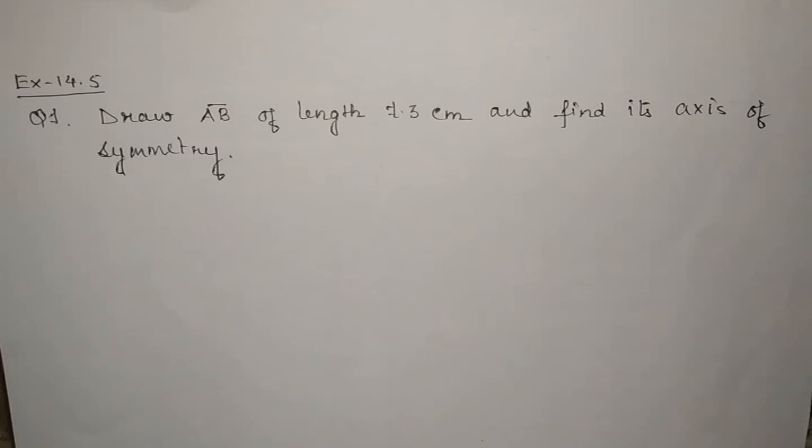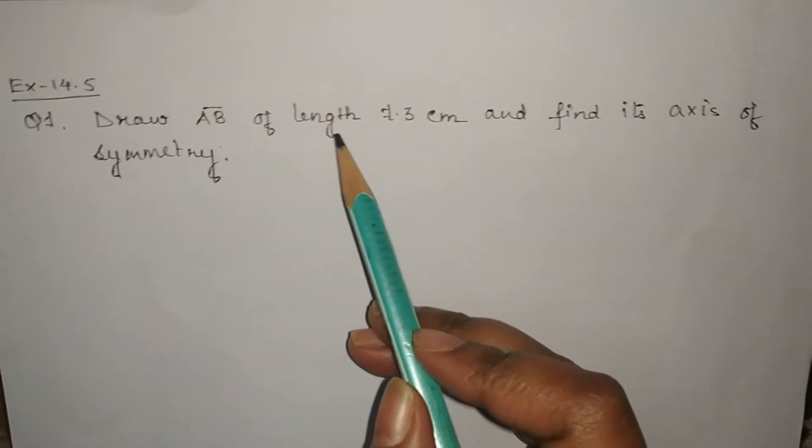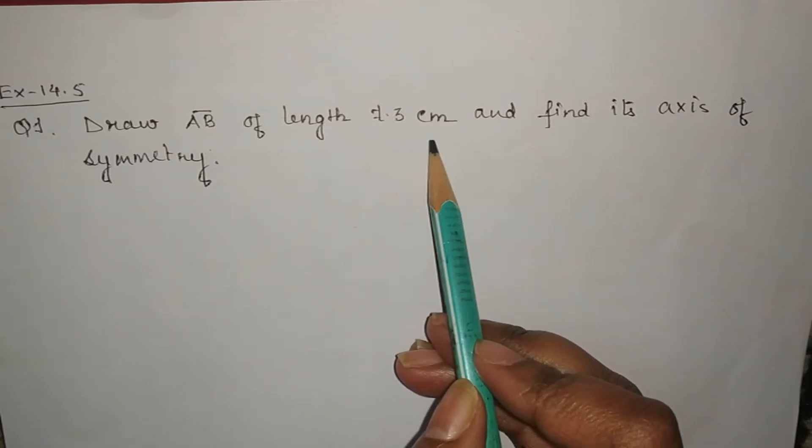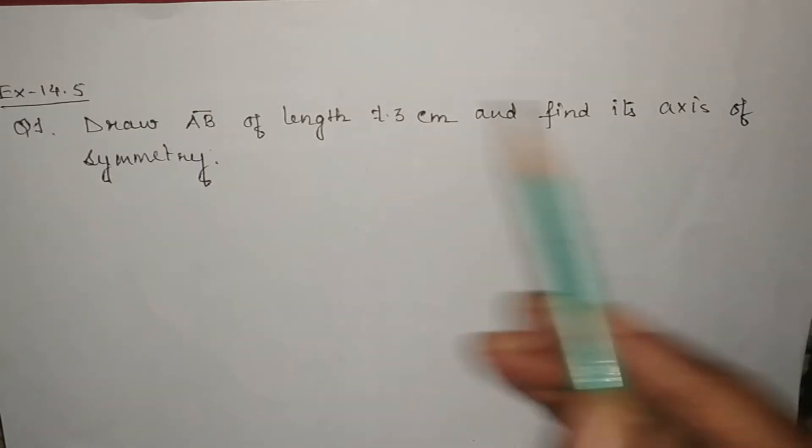Hello everyone, now we are going to start question number 1 of exercise 14.5. In this question we have to draw a line segment AB of length 7.3 cm and find its axis of symmetry.